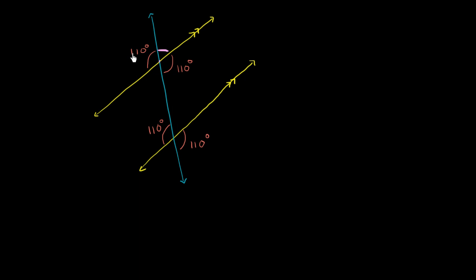So this pink angle plus 110 is going to be equal to 180, or we know that this pink angle is going to be 70 degrees. And then we know that it's a vertical angle with this angle right over here, so this is also 70 degrees.